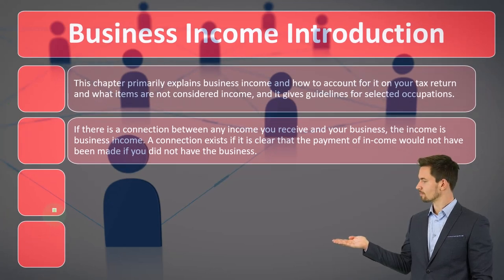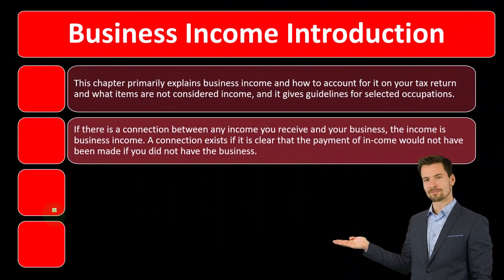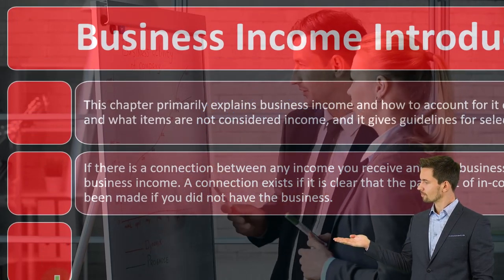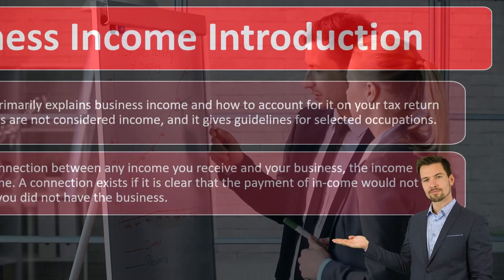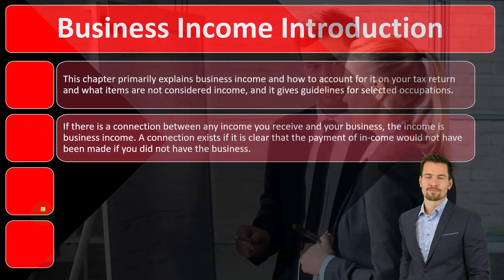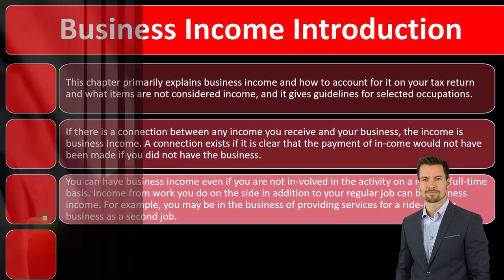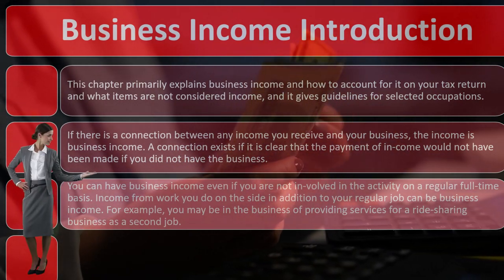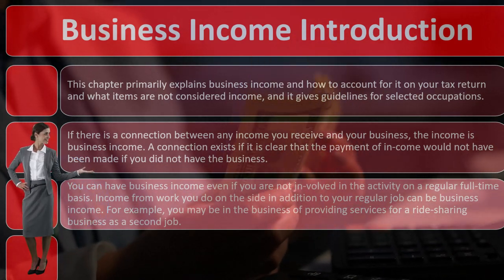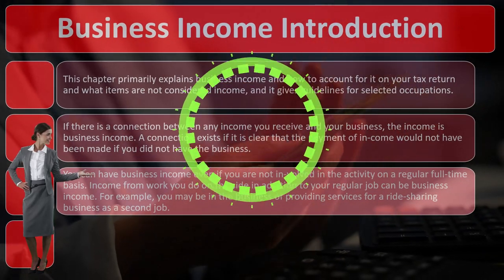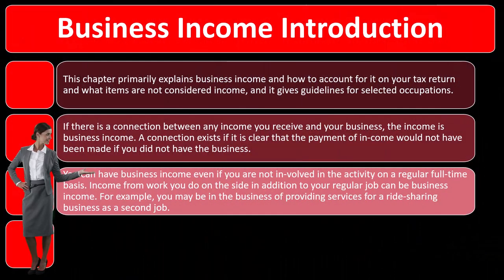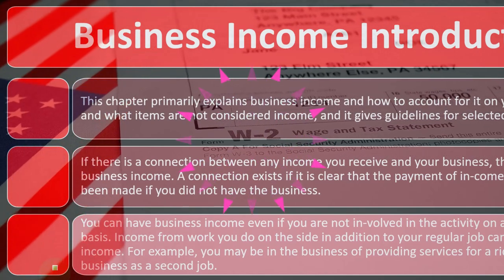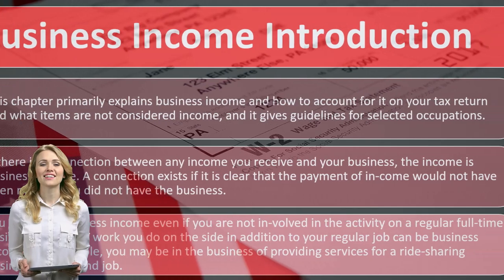A business requires a profit motive for doing the activity. A connection exists if it is clear that the payment of income would not have been made if you did not have the business. You can have business income even if you are not involved in the activity on a regular full-time basis. So if it's only gig work — some YouTube income, some gig work platform income — it's still business income even if you're not full-time with another W-2 job. You still need to report the income.